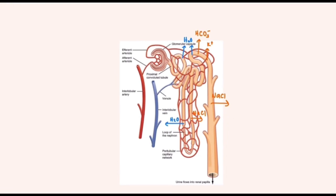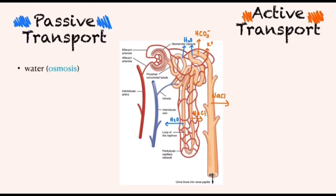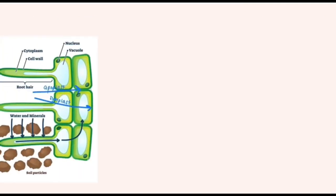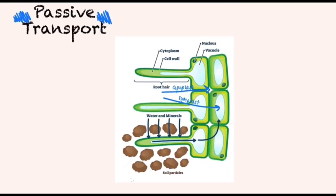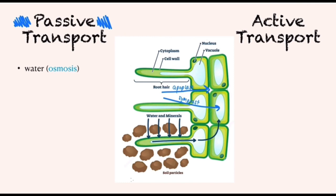In the renal tubule, water is reabsorbed by osmosis, while glucose, amino acids, and mineral ions such as sodium ions are reabsorbed by active transport. In the root of plants, water from the soil is transported through osmosis into the apoplast and symplast. Since there is a higher concentration of minerals in the root, mineral ions in the soil are transported through active transport by the roots.